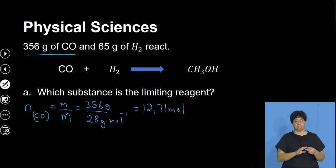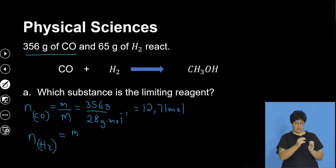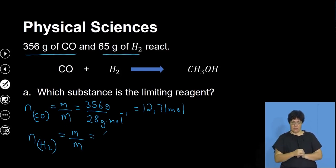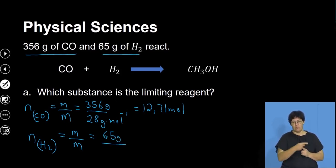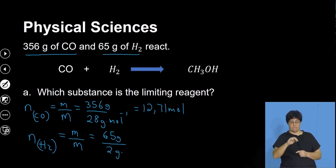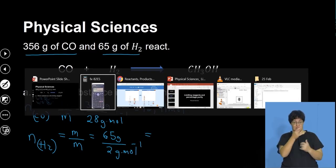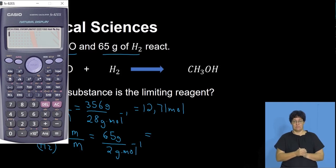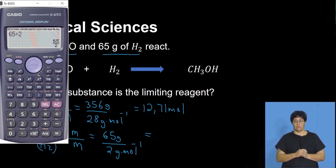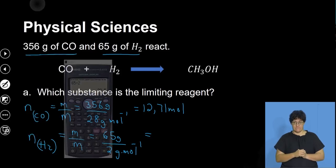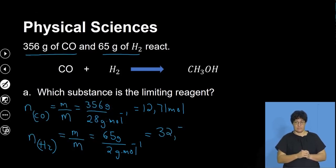For hydrogen: moles equals mass over molar mass. The sample has a mass of 65 grams. The molar mass of hydrogen gas H₂ is 2 grams per mole. So moles of H₂ = 65 divided by 2, which gives 32.5 moles.